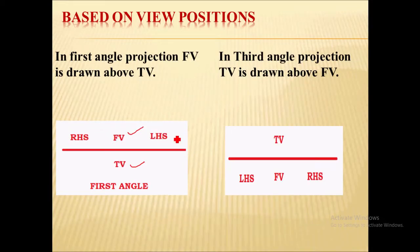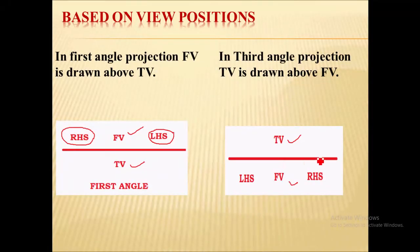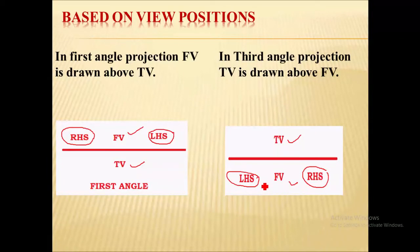Regarding side views in first angle projection: the left hand side view is drawn on the right hand side of the front view, while the right hand side view is drawn to the left hand side of the front view. In case of third angle projection, the top view is above the XY line and the front view is below the XY line. Here, the right hand side view is drawn on the right hand side of the front view, while the left hand side view is drawn to the left hand side of the front view.